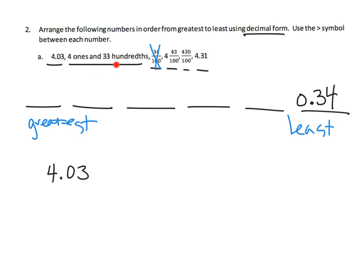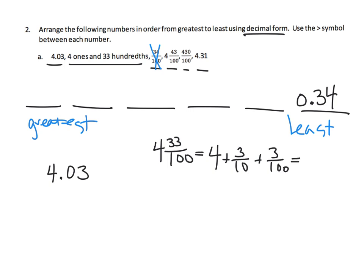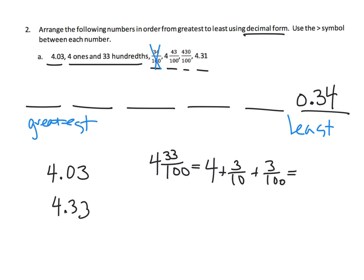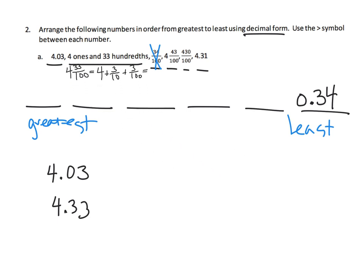Now let's look at four ones and 33 hundredths. We can think of that as four ones plus three tenths plus three hundredths — that's the same thing as 4.33. So we now have another decimal form, and we can set that original form aside as a reminder of where it came from.